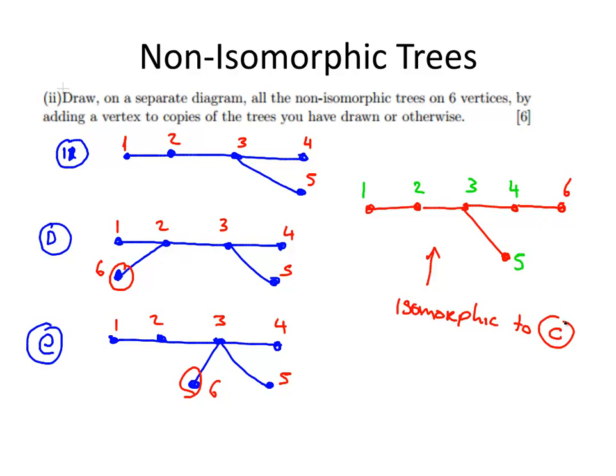Likewise, you can sort of pick out a few other ones there. If we were to add something like this instead, draw it out here, it would be isomorphic to B. Okay, so that's what we've got to be looking out for.